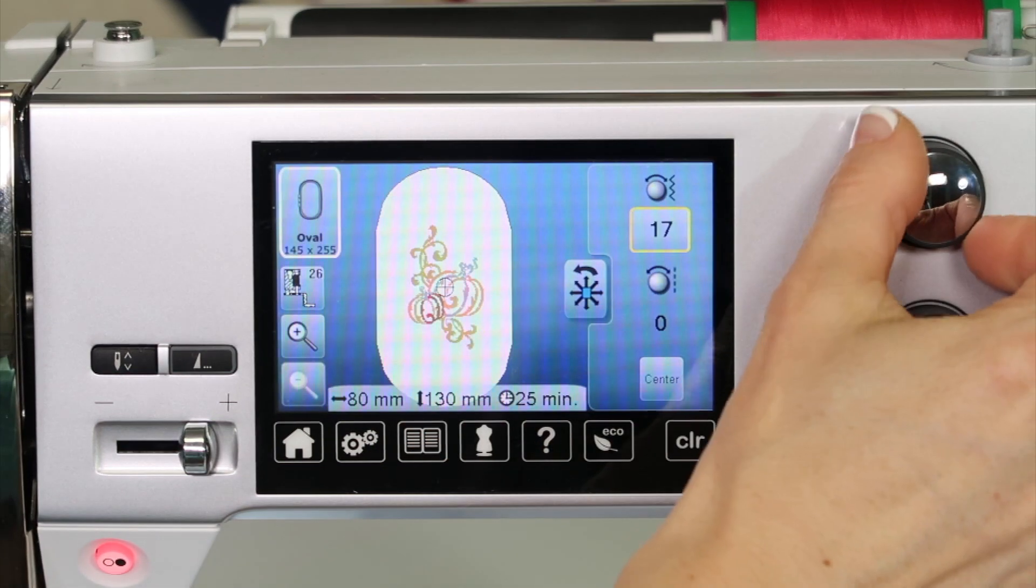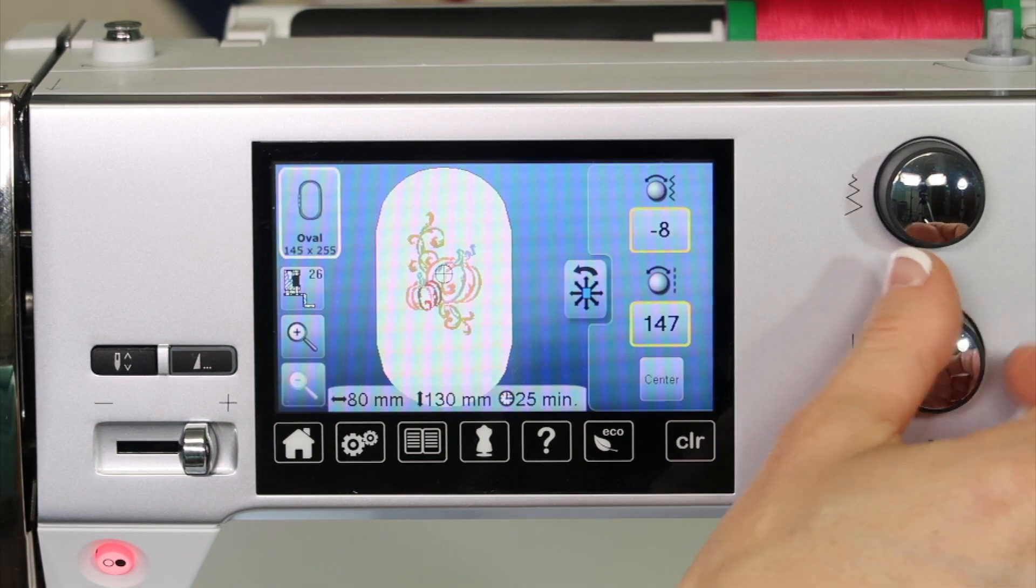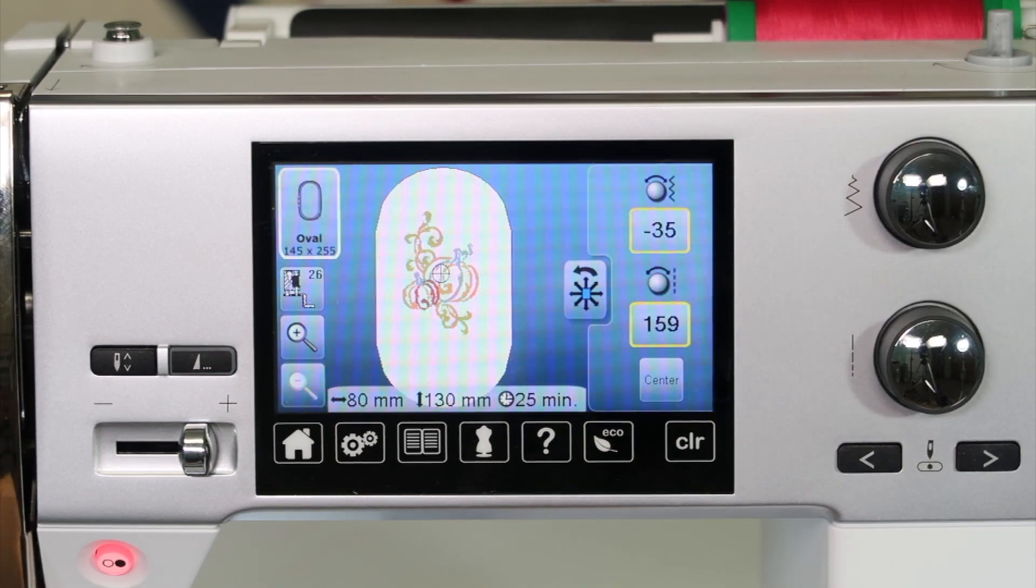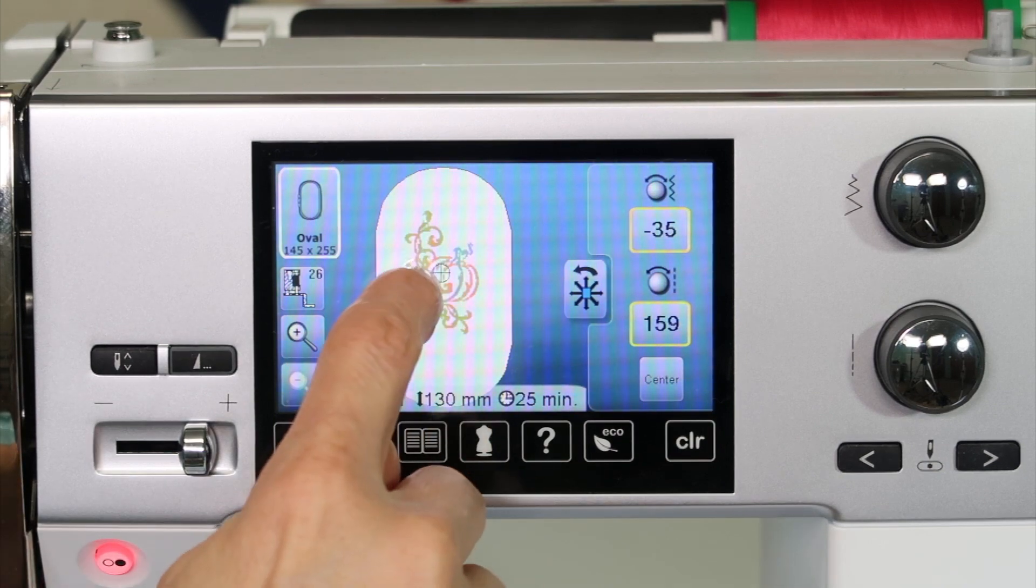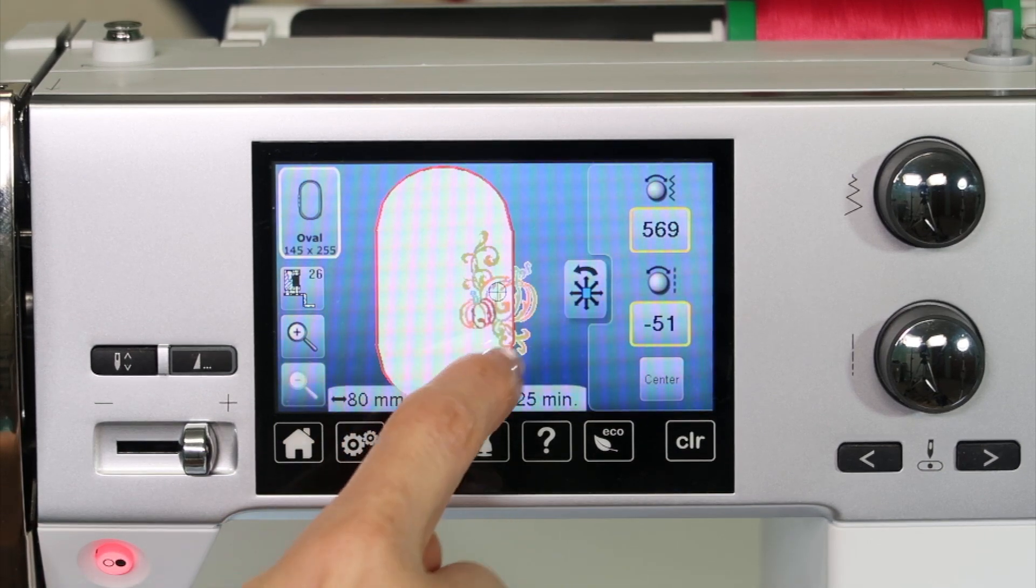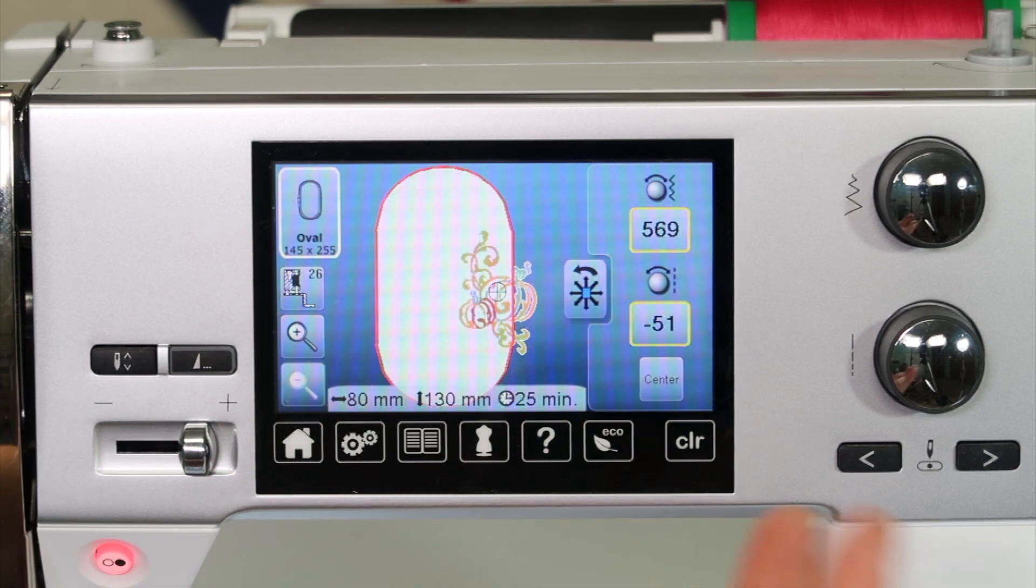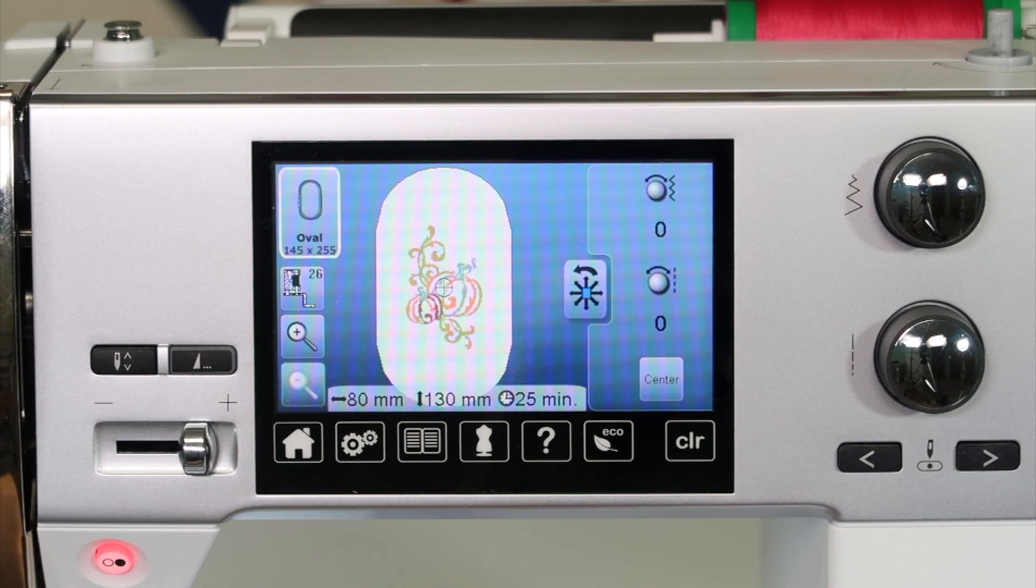Moving a design, you can do it with the knobs. We use these quite a bit within the embroidery part. Go up or down, or left or right, kind of feels like a giant etch-a-sketch. You can also touch the design and move it with your finger. If you go outside the hoop, the hoop will turn red and kind of give you an indication you probably shouldn't stitch with the design right there.